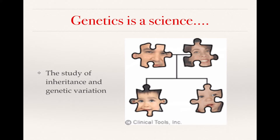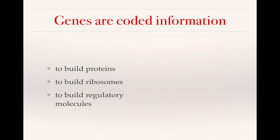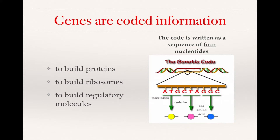Genetics is the study of the patterns of genetic variation and how they're inherited through families. Genes are coded information used to build proteins and ribosomes. Many of these proteins, and sometimes other products of genes, are used to regulate or control what's happening in the cell. Genes are the recipes for just about everything — you can't run or build anything without proper genetic code.